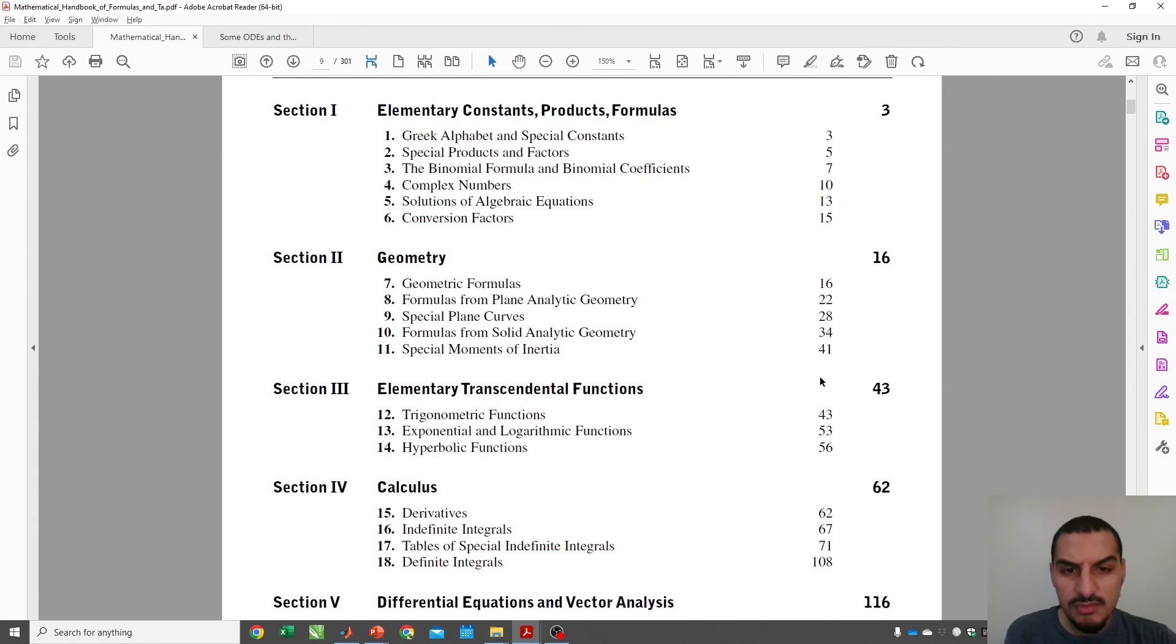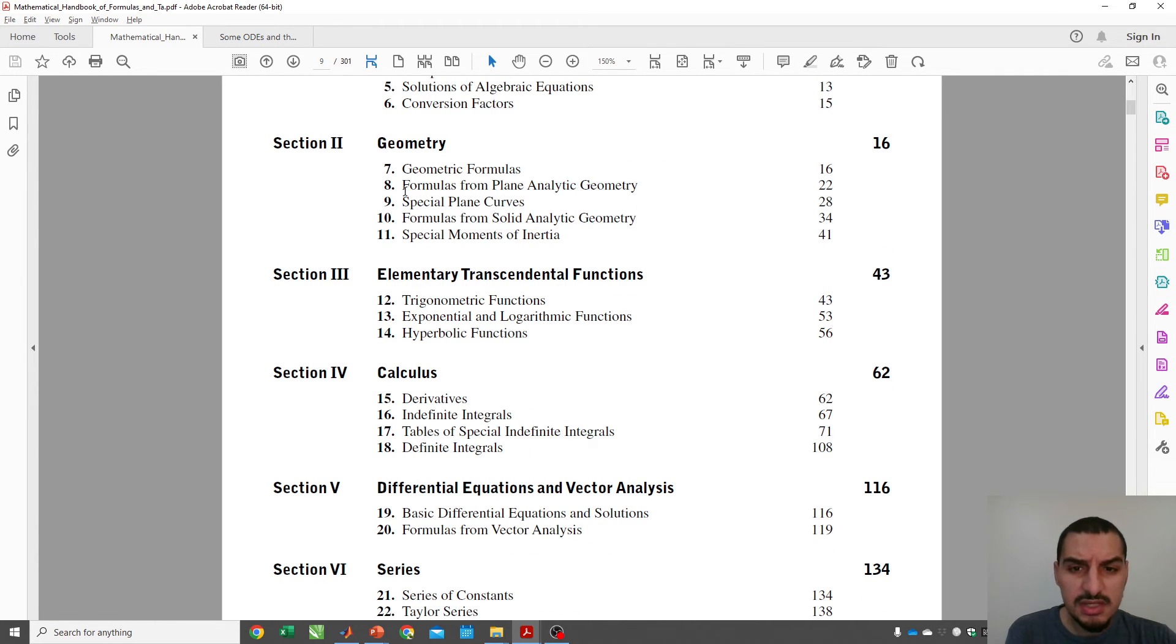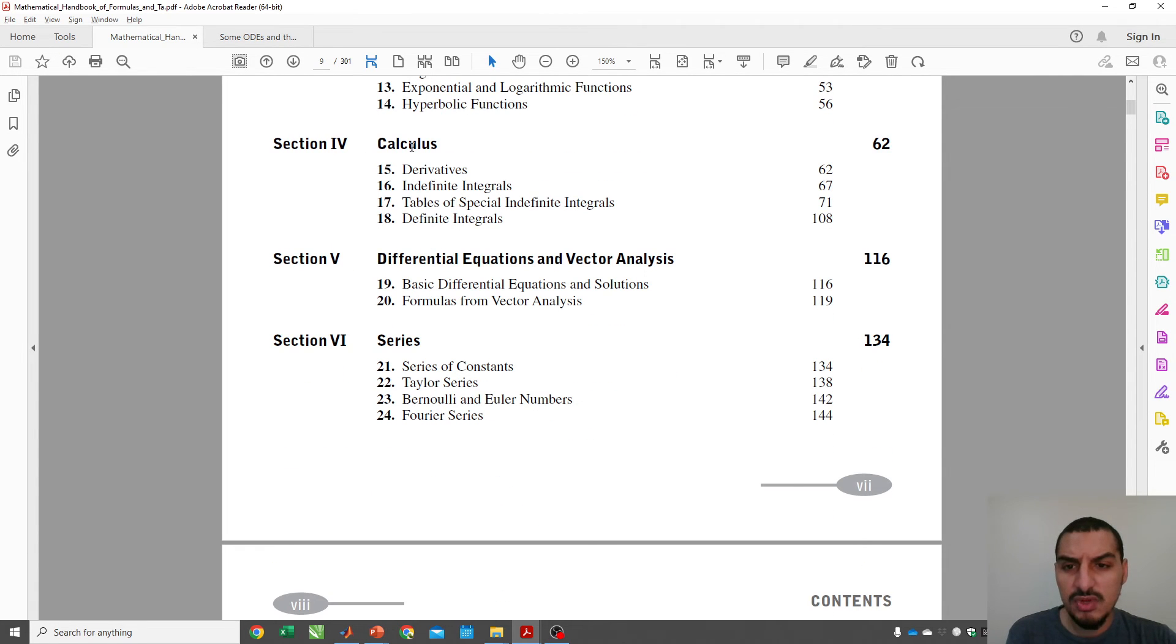Let's take a look at the table of contents. It starts with the basic concepts, the elementary constants, the formulas, then geometries, areas, volumes, and related things. Then you have a lot of information about almost 40 or 50 pages of calculus for the derivative, indefinite integrals, table of special integrals. I think the table of integrals that we have is already here, but you'll have them sorted in a very easy way to follow.